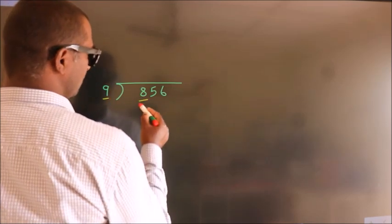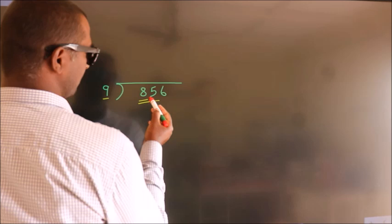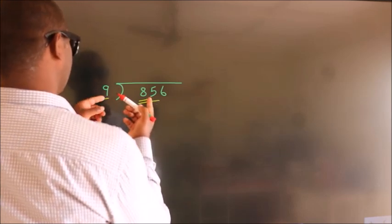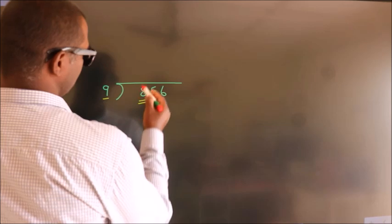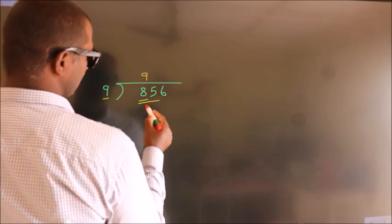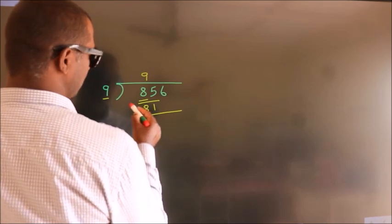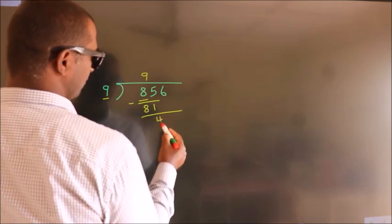So we should take two numbers, 85. A number close to 85 in the 9 table is 9 times 9 equals 81. Now we should subtract. We get 4.